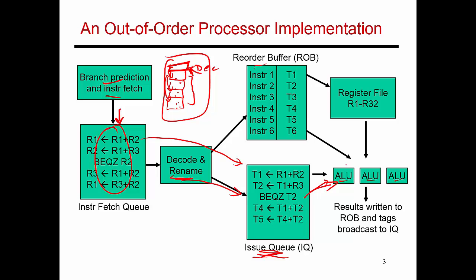So these instructions execute and finish. Once they've produced a result, what they want to do is write their results into the register file. But you don't want instructions to complete out of program order, so when they finish, they store their results in some temporary storage unit — they all write their results into this temporary storage. This structure is called the reorder buffer. It remembers the order in which instructions entered the pipeline. The decode unit processes instructions in program order and places them in program order into both the issue queue and the reorder buffer. So the first entry is occupied by instruction one, followed by the second instruction in program order, followed by instruction three, and so on.